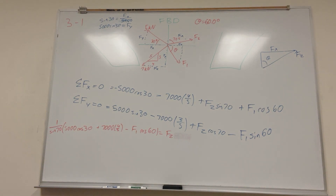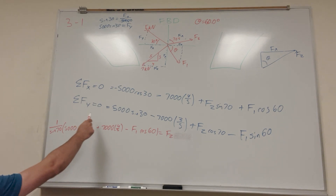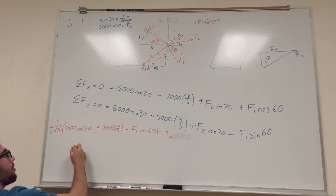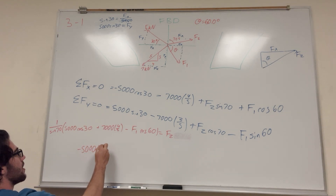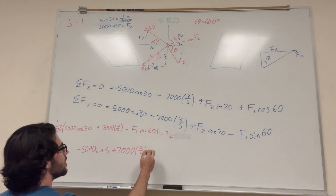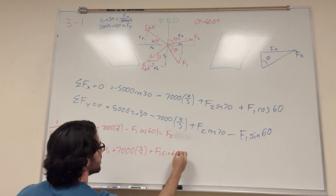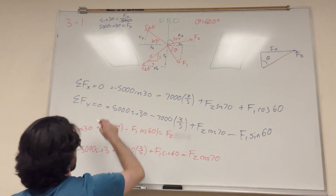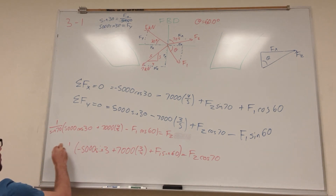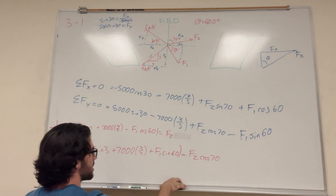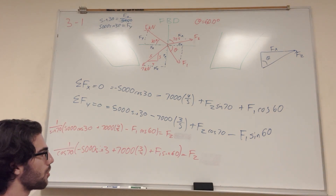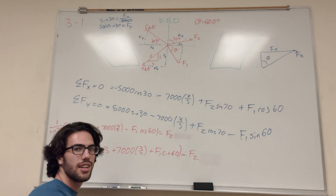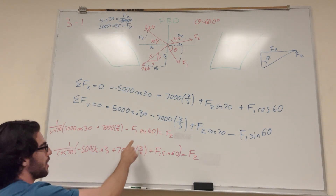Doing the same for the y-direction equation: moving terms over gives −5,000 sin30 + 7,000(3/5) + F1 sin60 = F2 cos70. Dividing both sides by cosine of 70: F2 = (1/cos70) × (−5000 sin30 + 7000(3/5) + F1 sin60). Now we have two expressions both equal to force 2, and since they're equal to each other we can set them equal — giving us one equation with just one unknown.